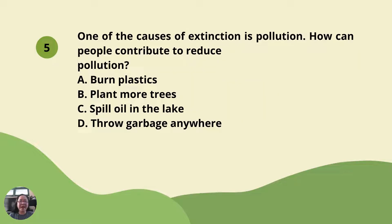Number 5: One of the causes of extinction is pollution. How can people contribute to reducing pollution? A. Burn plastics. B. Plant more trees. C. Spill oil into lakes. D. Throw garbage everywhere.